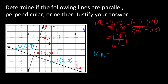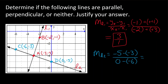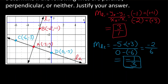Now let's find the slope for line two. I'll choose point D as my point two, so I go negative five minus negative three for the y values, and then zero minus negative six for the x values. Negative five plus three is negative two, and zero minus negative six is positive six. We can reduce that to negative one over three.